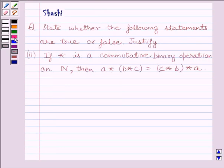Now, let us start with the solution. We know star is a commutative binary operation on N.